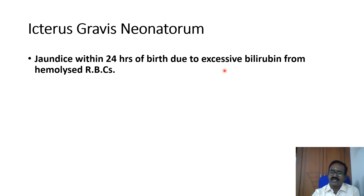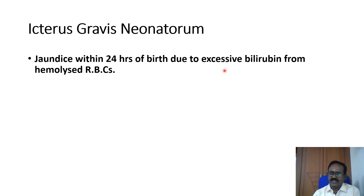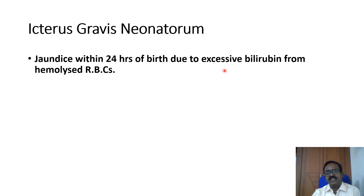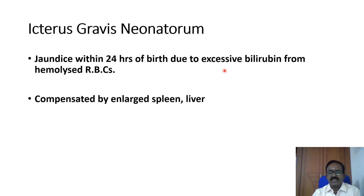Physiological jaundice occurs two to three days after delivery, mainly due to excessive production of RBCs from the liver and spleen rather than bone marrow, and it subsides within one week. We keep newborns under early morning sunlight to convert bilirubin into inactive lumirubin. Pathological jaundice occurs immediately within 24 hours of birth and is compensated by an enlarged spleen and liver in icterus gravis neonatorum.